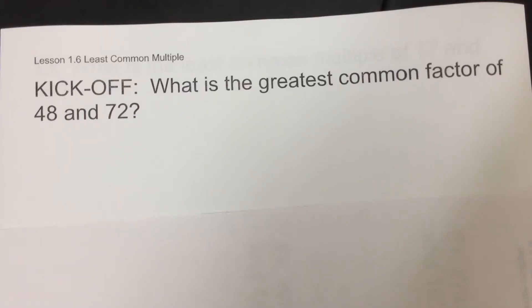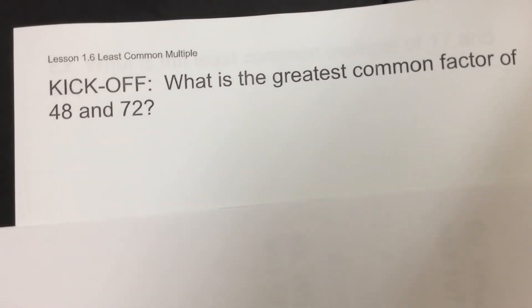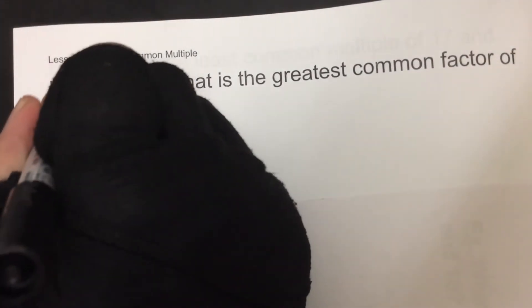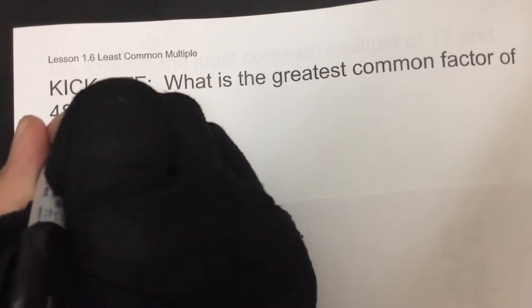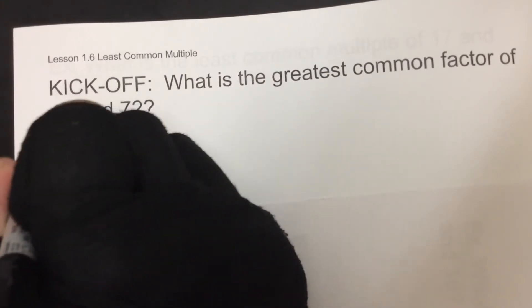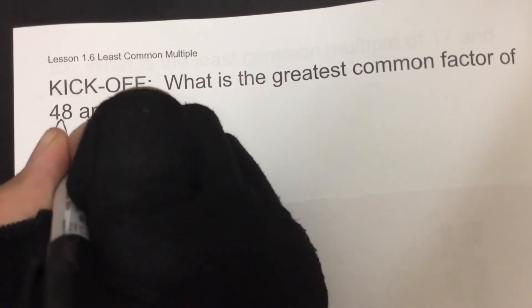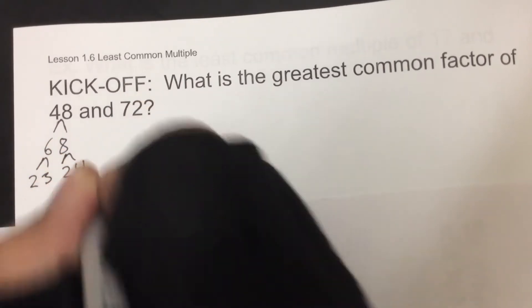Alright, what is the greatest common factor of 48 and 72? Well, we're going to take 48 and break this one up. So 48 goes to 6 and 8, which goes to 2 and 3. 8 goes to 2 and 4, which goes to 2 and 2.